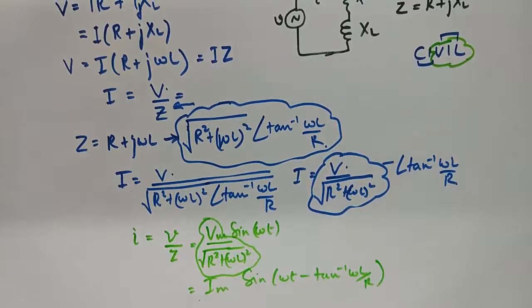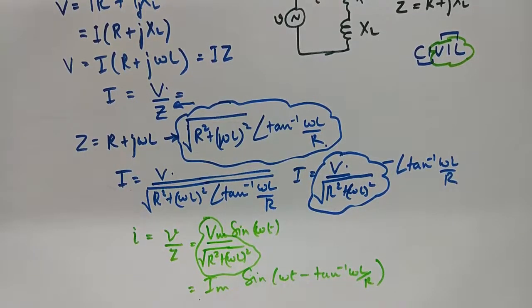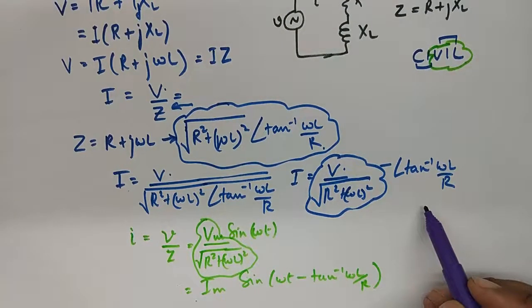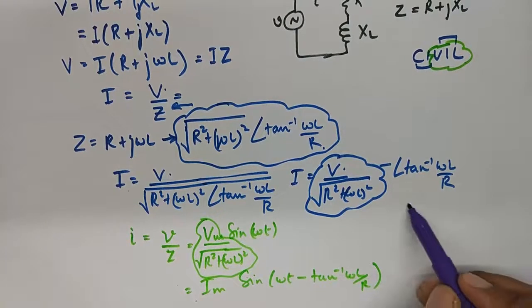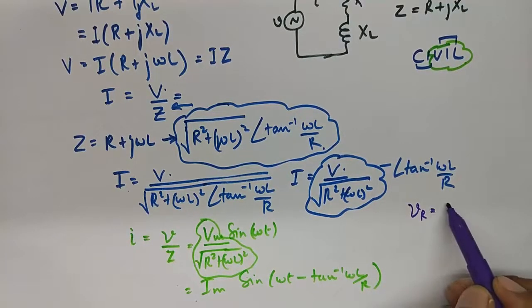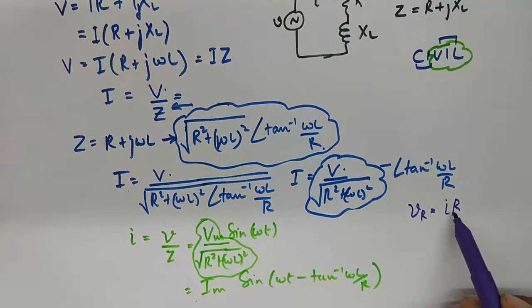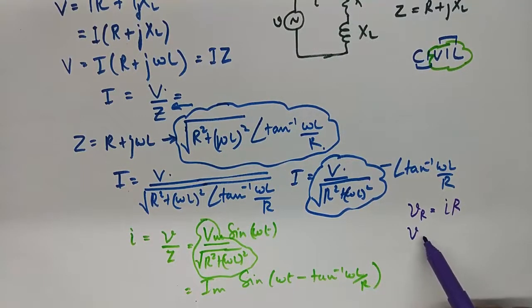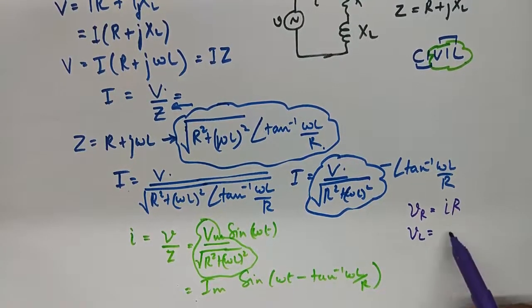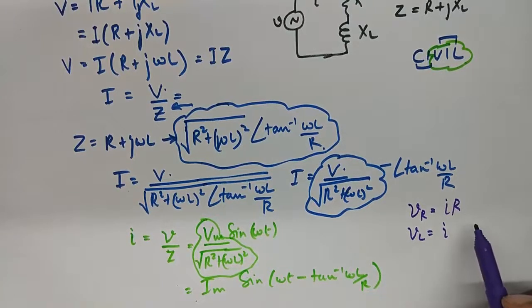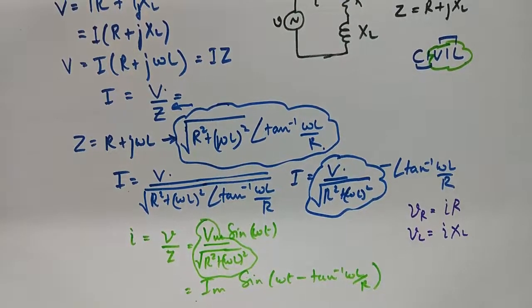So this becomes the value of my instantaneous current, and the voltage drops consequently can be found out very easily. The voltage drop across resistor is I into R, and at any point in time you can find the voltage drop. The voltage drop across L will be I into XL, so pretty easy to find out.